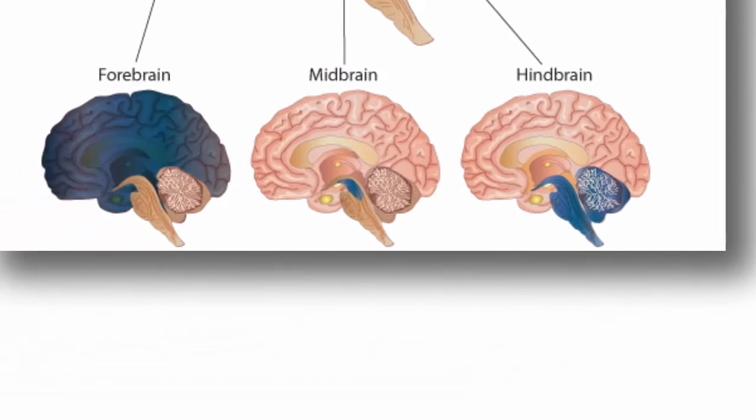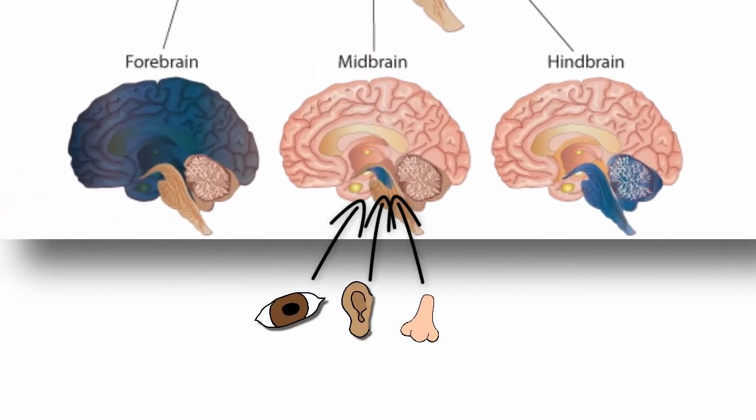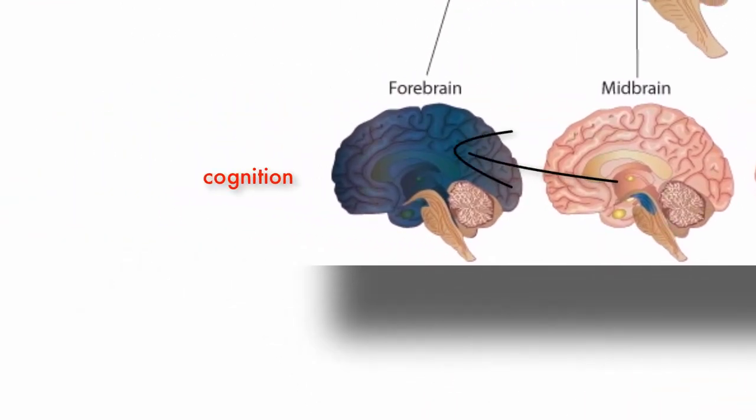The midbrain is associated with relaying sensory information to the forebrain, which controls cognition and motor function.